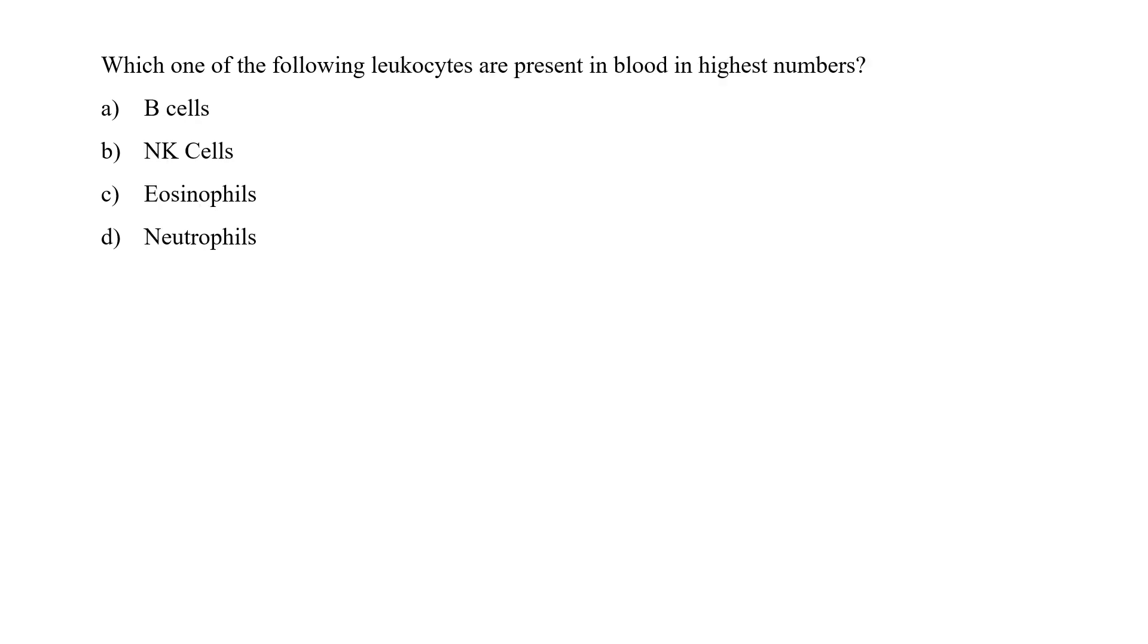Which one of the following leukocytes are present in blood in highest number? This is very simple question—neutrophils which account for 40 to 70 percent of all leukocytes, they are the most abundant leukocytes which are present in the blood. They are also the first responders when they go to the site of infection. So option B would be the correct answer.